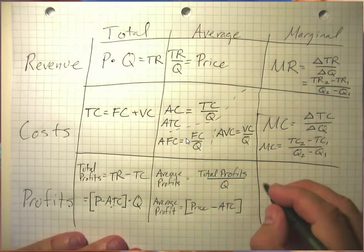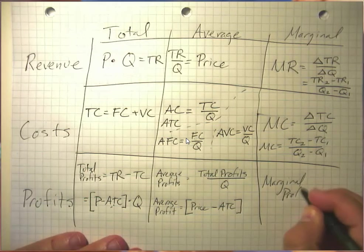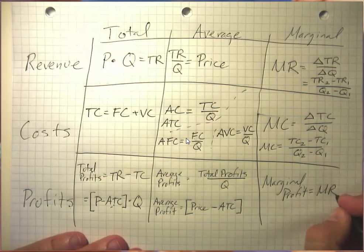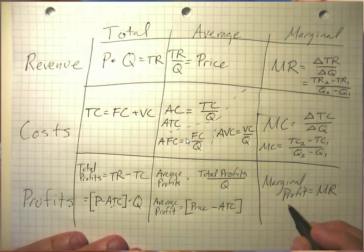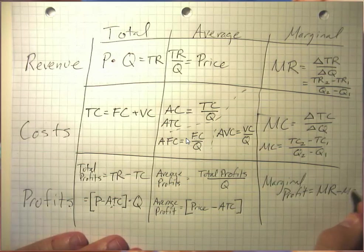There's also marginal profit. And marginal profit is how much additional profit did we get by selling one more unit? So that's marginal revenue, the additional revenue the one more unit contributed, minus marginal cost. So that's one way to compute it.